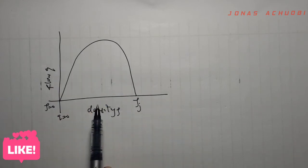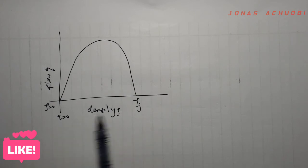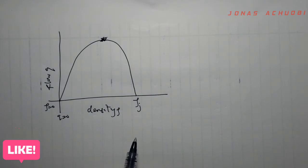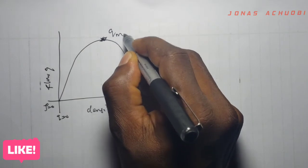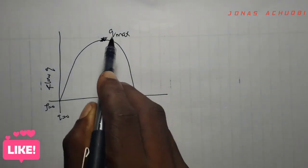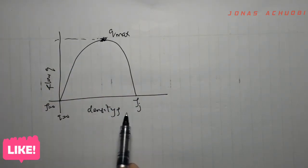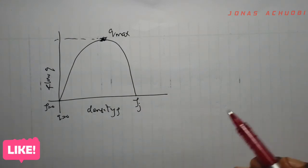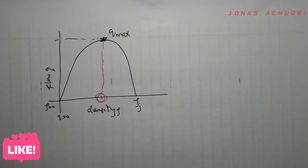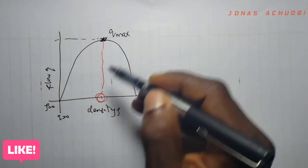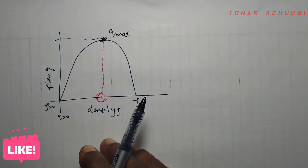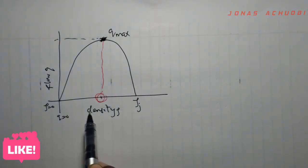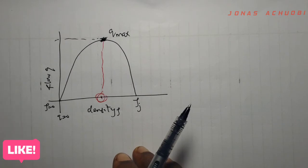Since the flow-density graph is a vertically downward parabola, there must exist a maximum point somewhere on the curve. This maximum point corresponds to where flow is maximum. Since the flow rate is maximum at this point, it is interesting to determine at what density the flow becomes maximum. Using calculus, we want to find the critical value of the flow function at that point.